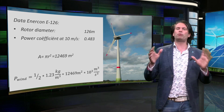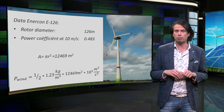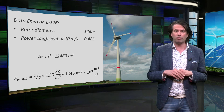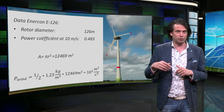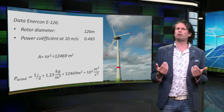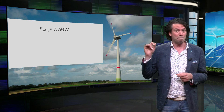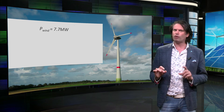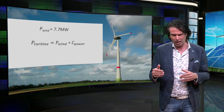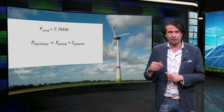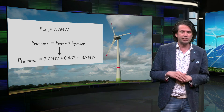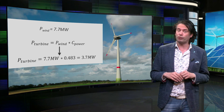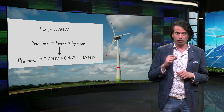Now, the power in the wind is: P_wind equals half times 1.2 kg/m³ times 12,000 m² times 10³ m³/s³. This results in a potential power in the wind of approximately 7.7 megawatts. However, this is not yet the power that can be extracted by the turbine. The power of the turbine is the available wind power multiplied by the power coefficient: 7.7 MW times 0.48, which equals 3.7 megawatts. This is very close to the actual value of 3.75 megawatts in the datasheet of the Enercon wind turbine.